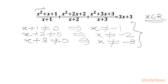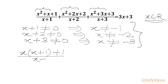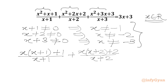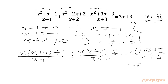Now we have to simplify our LHS first. I will take x common from these two terms in the numerators. So I can write x times (x plus 1) plus 1 over (x plus 1), plus x times (x plus 2) plus 2 over (x plus 2), plus x times (x plus 3) plus 3 over (x plus 3). And the RHS is 3x plus 3.